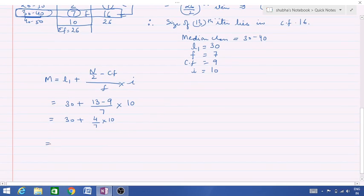30 plus 40 upon 7. Now if we take LCM and solve, it will be quite lengthy, so you can completely solve this side first, then add it. So by dividing 40 by 7 we get 5.71, now add and it becomes 35.71. Hence median is equal to 35.71.